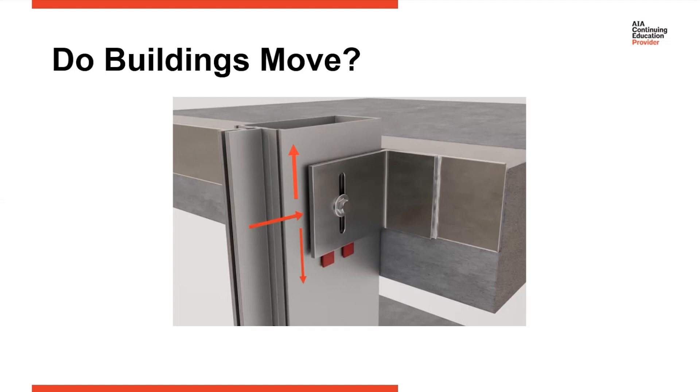Here's another picture of a typical curtain wall wind-load anchor. This anchor allows for vertical movement. As you see, it's slotted, but it still resists deflection due to wind load.